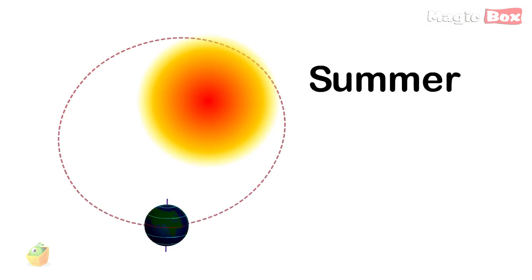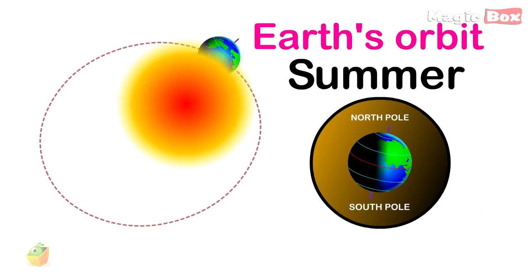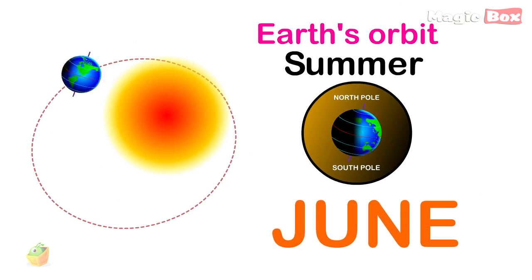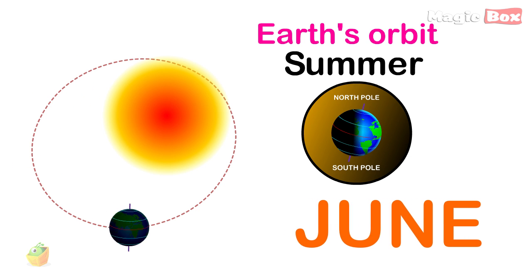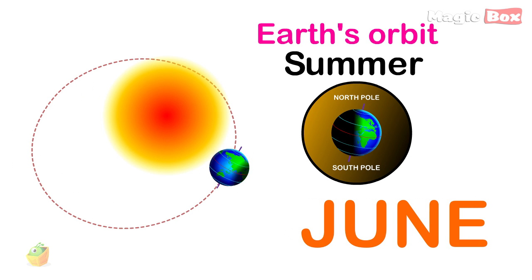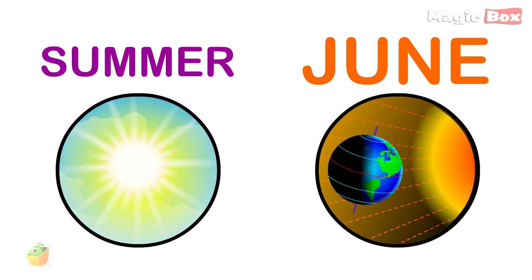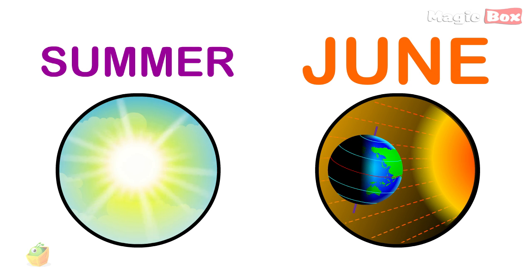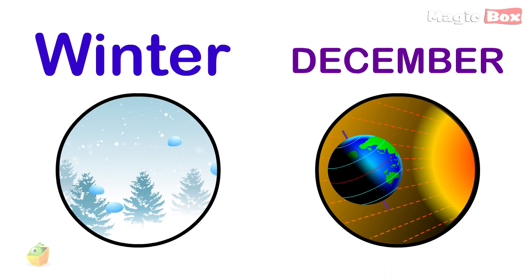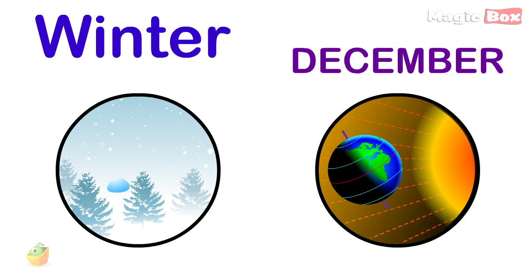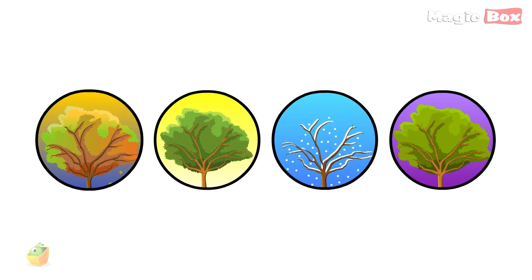Hence, the seasons. It is summer in June in the Northern Hemisphere because the Sun's rays hit that part of the Earth more directly than at any other point in Earth's orbit, or in other words, more directly than at any other time of the year. It is winter in December in the Northern Hemisphere because that is when it is the South Pole's turn to be tilted toward the Sun.